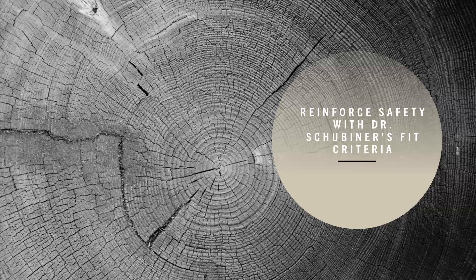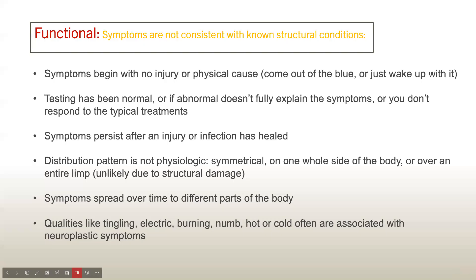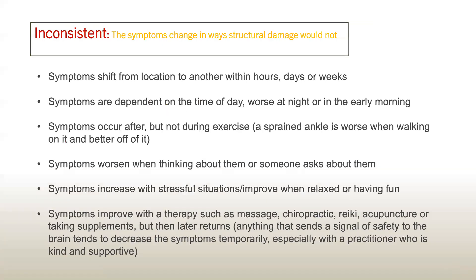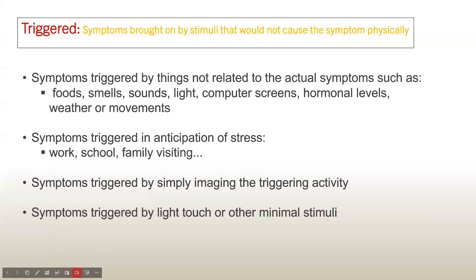Part of what's so hard about this work is that there's no test to confirm your symptoms are neuroplastic — we have to assess it through the pattern of the symptoms. If you still have questions about your own symptoms being neuroplastic, I encourage you to pause the video and go through the criteria yourself. The Functional part of the FIT criteria is that the symptoms are not consistent with known structural conditions. The Inconsistent part is that the symptoms change in ways structural damage would not. And the Triggered part is that the symptoms are brought on by stimuli that would not actually cause them physically — it's a conditioned, learned response, like the sound of the bell and Pavlov's dog salivating.